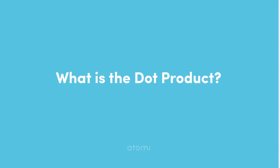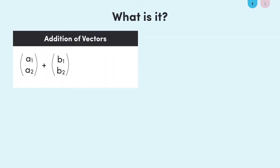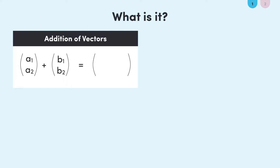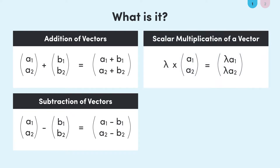By now you should be getting comfortable with how we add two vectors. If we have our vectors A and B in the column vector form, then when we add them together, all we are doing is adding the top entry of A, A1, with the top entry of B, B1, and the same for the bottom entries. Subtraction was very similar. We have also looked at multiplying a vector by a scalar.